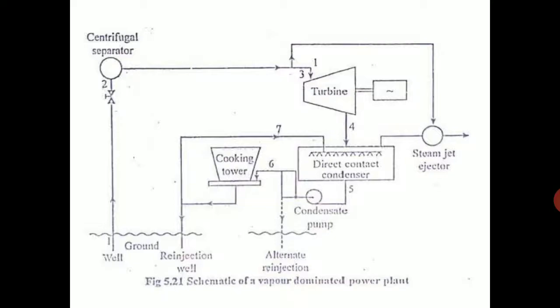There is a centrifugal separator so that we only take the steam. The steam goes to the turbine, rotates the turbine, and the turbine is connected to a generator and electricity is produced. Then the expansion of steam from the turbine, it loses its energy.